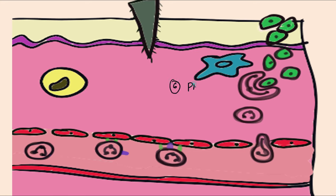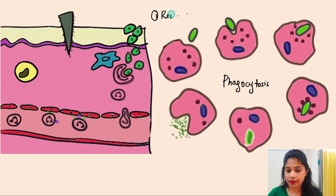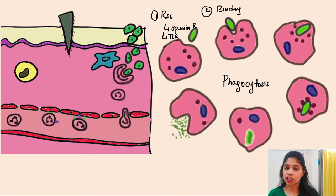The sixth and final step is phagocytosis — the killing or neutralization of bacteria and foreign bodies. Phagocytosis is a complex process. The first sub-step is recognition and binding: host cells recognize the foreign body and bind to it via specific receptors such as the opsonin receptor and the toll-like receptor (TLR). These receptors help in recognition and binding of the host cell to the bacteria.